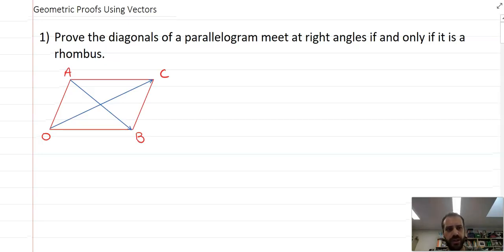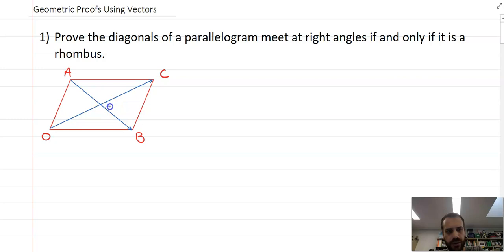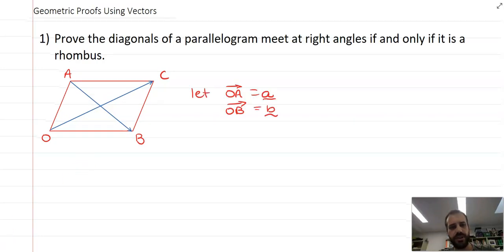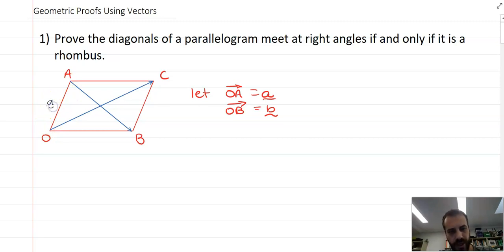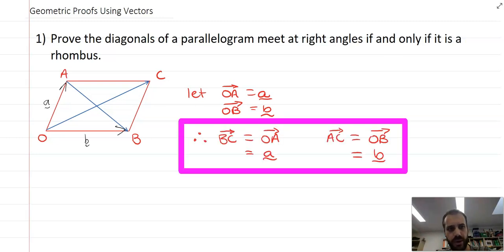So this is a parallelogram, and we're trying to prove that there will be a right angle there, but only if it's a rhombus. Let's get rid of that right angle. Let's do some vectors here. My first step is to actually put in some vectors. I'm going to let OA be vector A, and I'm going to let OB be vector B. So that's that vector there and that vector there. You should also note that because this is a parallelogram,